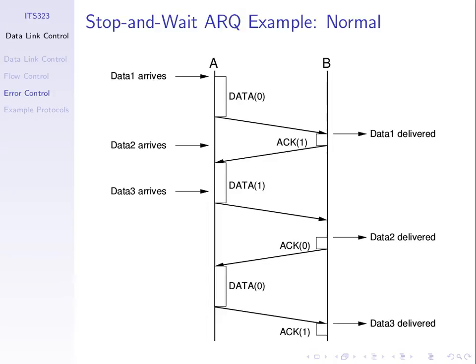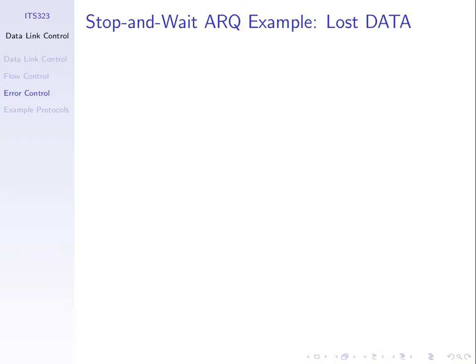With error control, we need to retransmit. So we need a mechanism for detecting when to retransmit. With stop and wait ARQ, it's very similar to stop and wait flow control — send data, receive the ACK, send data, receive the ACK. Of course, we care about what happens when things go wrong.